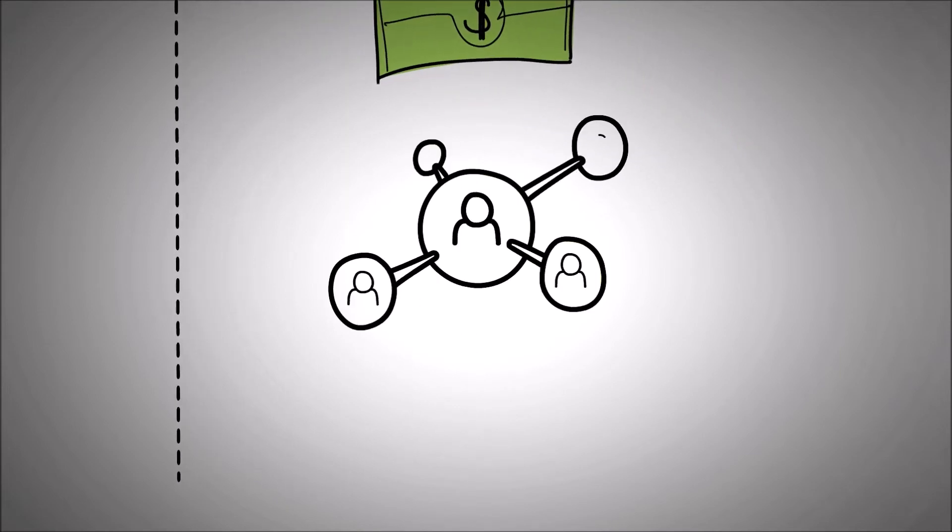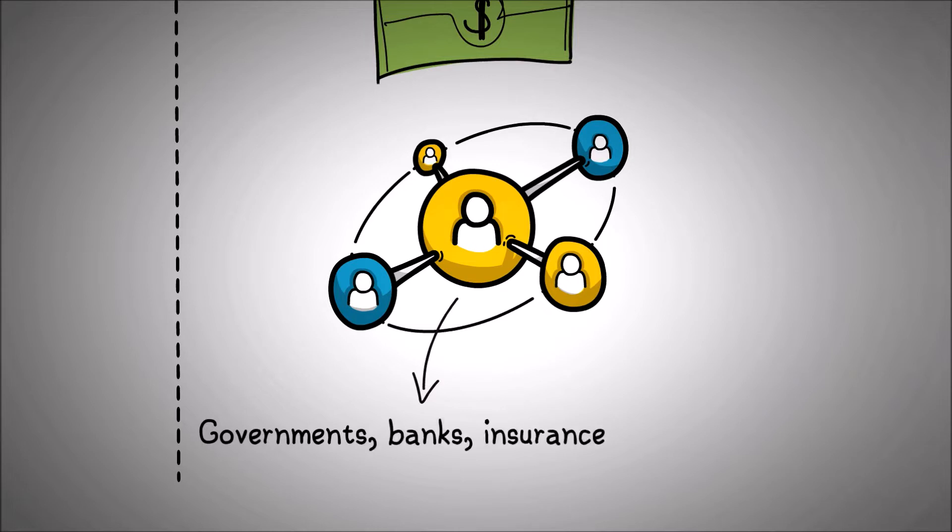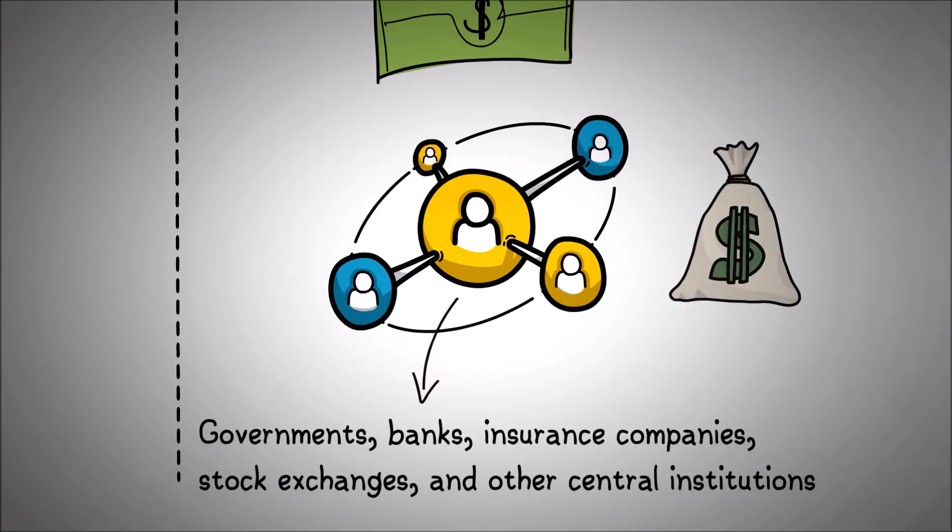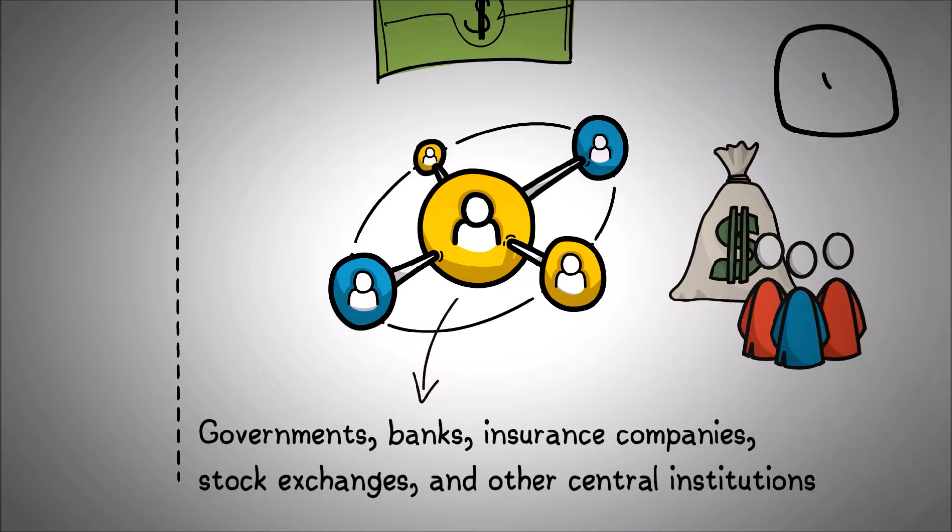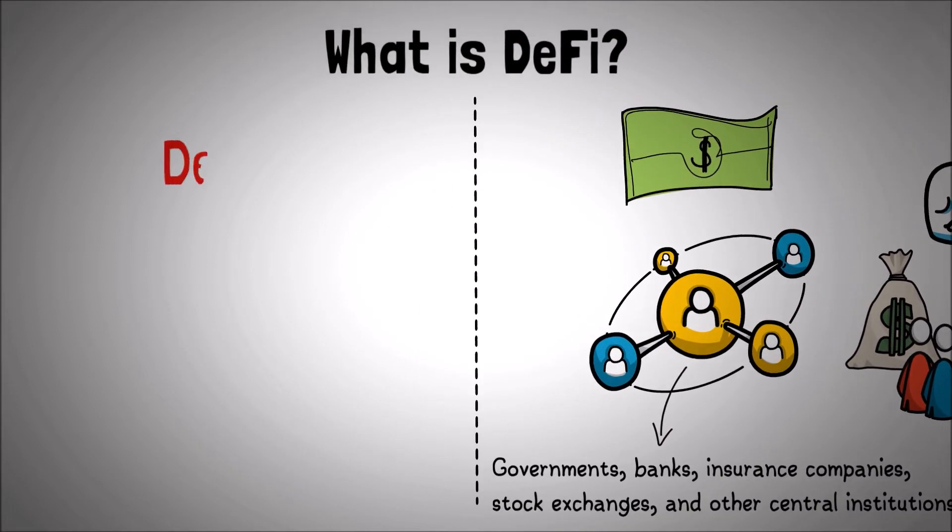So what is DeFi? The simplest way to understand DeFi is to distinguish it from the present financial system. The financial ecosystem that we are used to is centralized with the governments, banks, insurance companies, stock exchanges and other central institutions. This means that your money and your financial position are affected by someone else's decisions. There are a lot of disadvantages to this system and that's the reason why the decentralized alternative DeFi was born.